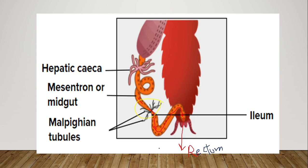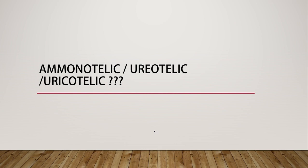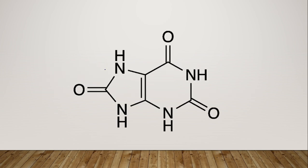This is how the malpighian tubules of the cockroach help in its excretion. Next, we are going to talk about whether cockroaches are ammonotelic, ureotelic, or uricotelic. The answer is that cockroaches are uricotelic — meaning they excrete their nitrogenous waste in the form of uric acid.